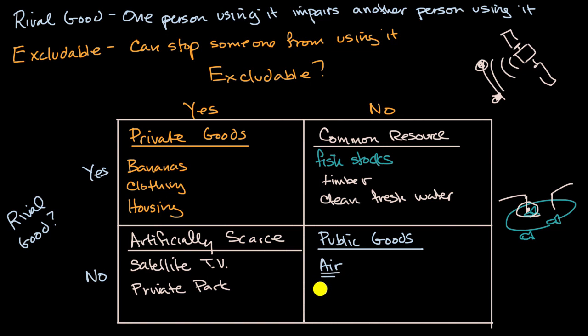You could imagine something like national defense. If you are benefiting from national defense because of aircraft carriers and missile systems and planes and the military that the nation has, does that exclude me, your neighbor, from also benefiting from it? No, and in fact, it would be very difficult to exclude. You'd have to kick me out of the country for me to not benefit from the national defense. So in general, we would consider it to be non-excludable. And then, is it a rival good? Well, if you are feeling safe because of national defense, that doesn't impair my ability to feel safe from national defense, so it's also a non-rival good, at least in most general circumstances. So I would consider that a public good as well.